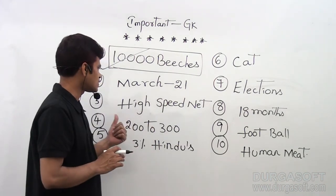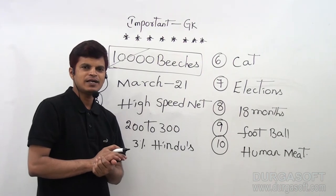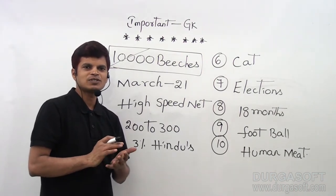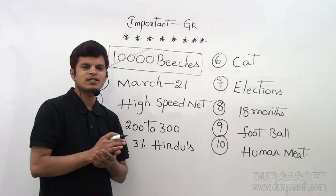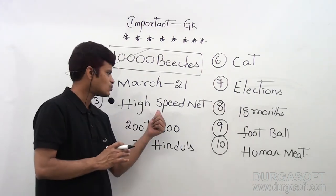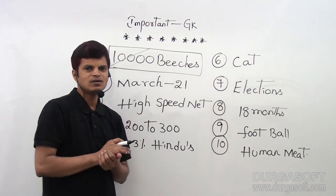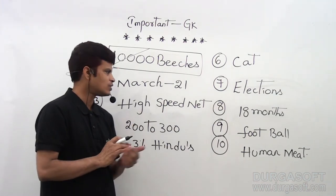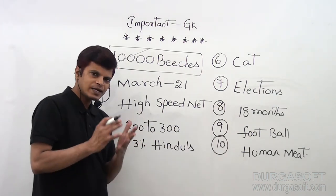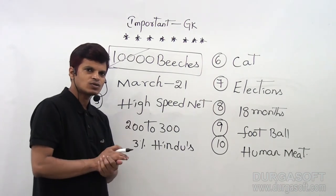Next — high speed internet. Which country has the highest internet speed? That country is South Korea. South Korea has the highest internet speed.